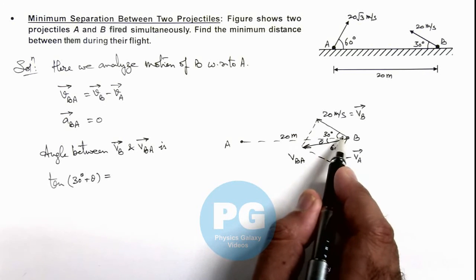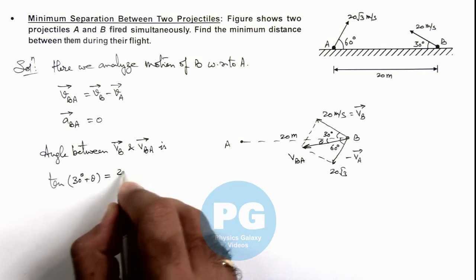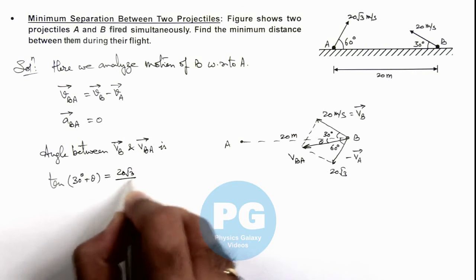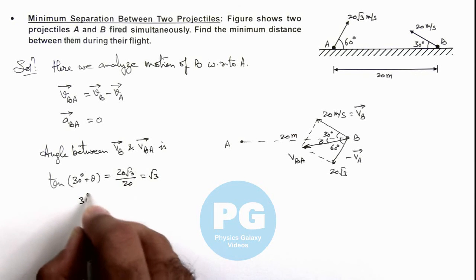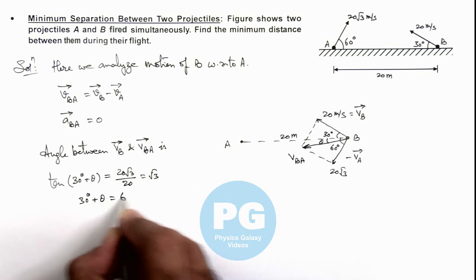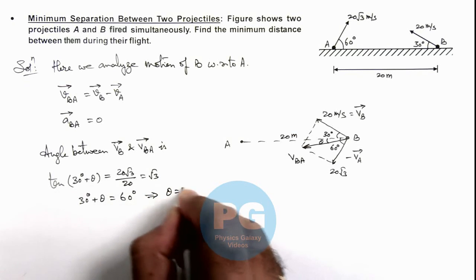In this situation we can write 20 root 3 divided by 20, that is root 3. So 30 degrees plus theta we can write as 60 degrees, as tan(30 + theta) is root 3. This implies we are getting the value of theta as 30 degrees.